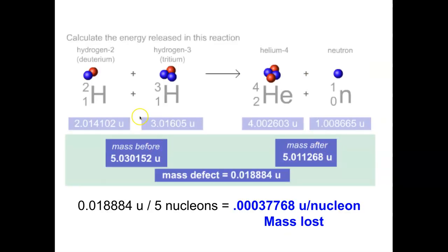Here's an example: deuterium and tritium come together, needing energy to overcome repulsive forces, fusing into helium and a neutron. Using atomic mass units (amu), we take the mass of the two reactants and compare to the mass of the two products. The product side has a slightly smaller total mass — that difference is the mass defect.